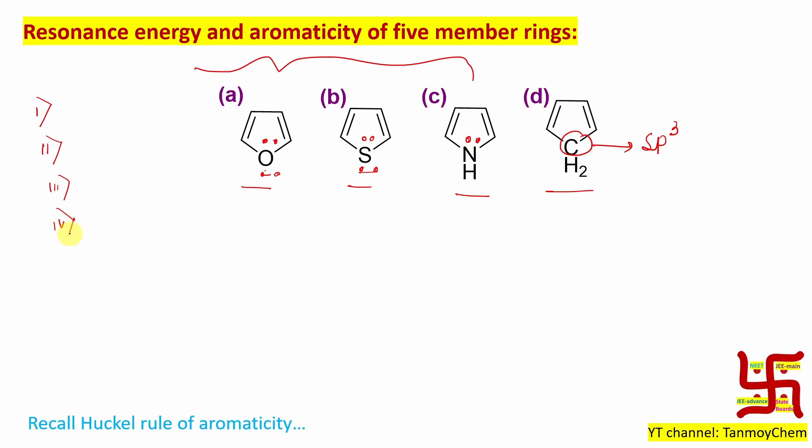Fourth, it has 4n plus 2 number of pi electrons for aromaticity. Remember, aromaticity means actually stability. In more detail, this stability comes because of delocalization.